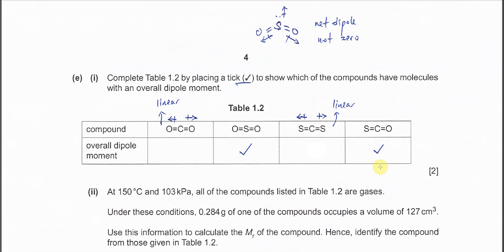Part E(i): Complete Table 1.2 and choose which compound has an overall dipole moment - which one has a net dipole that's not zero. For CO2, the oxygens pull electrons toward themselves. Because both oxygens are the same element, the dipole moments are equal and cancel out. The net dipole for CO2 is zero - it's non-polar. We don't choose this one.